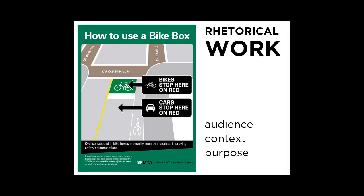Let's toggle next to a flyer that informs. This is a flyer by the San Francisco Municipal Transportation Agency. The primary audience here is bikers; the secondary audience might be drivers who have to watch out for bikers. The flyer informs bikers that cyclists stopped in bike boxes are easily seen by motorists, improving safety at intersections. The purpose is to inform bikers as to the best place to stop. I found this flyer online, so I'm not entirely sure of its larger context — it's saved on the SFMTA website, but I'd also guess it could be publicly posted in high-traffic bike areas, distributed to businesses, schools, and libraries.